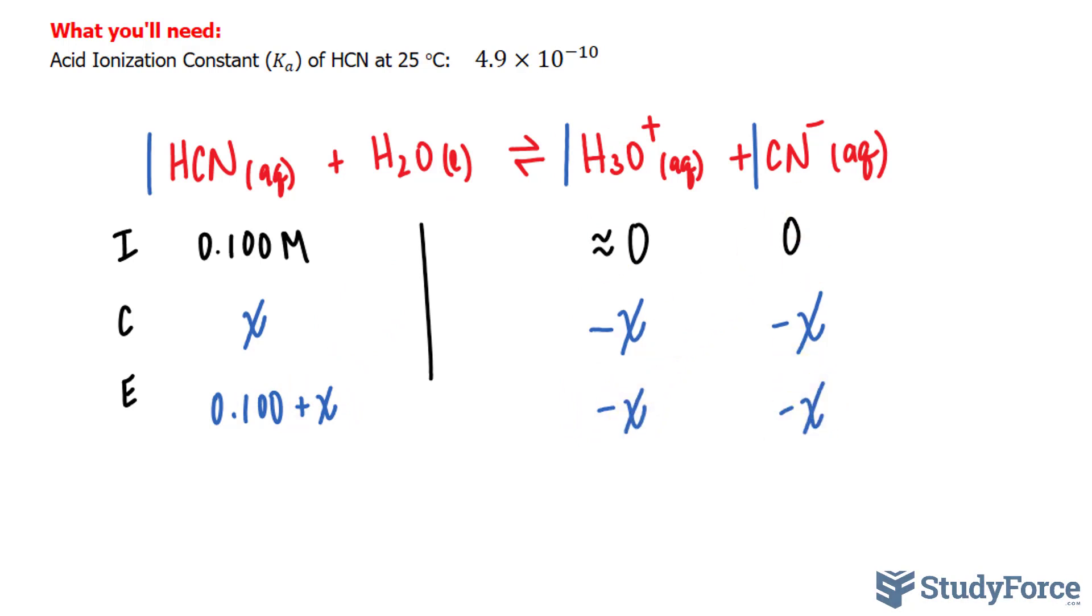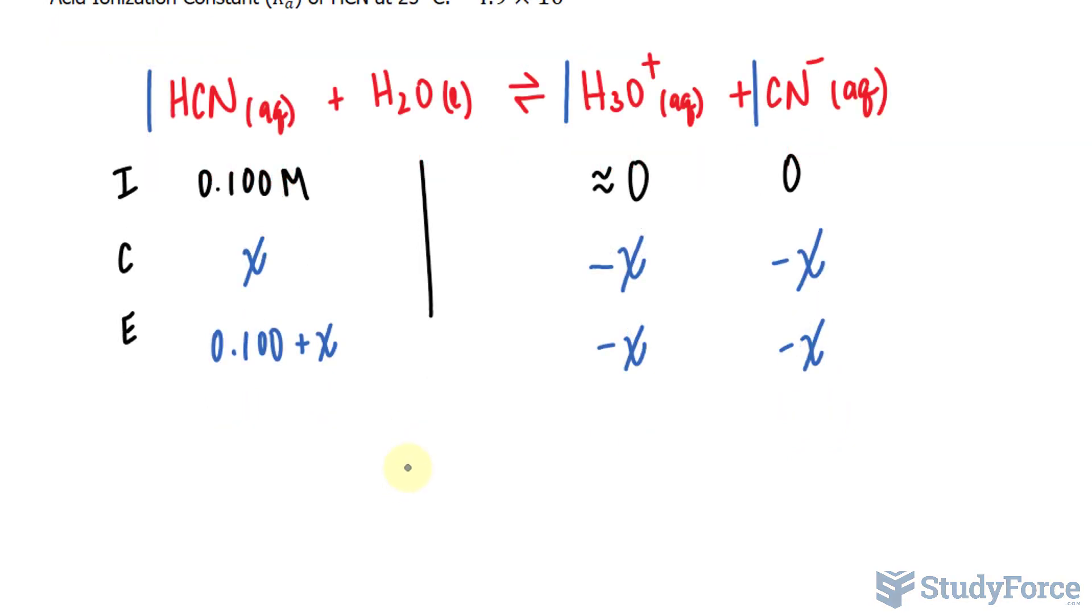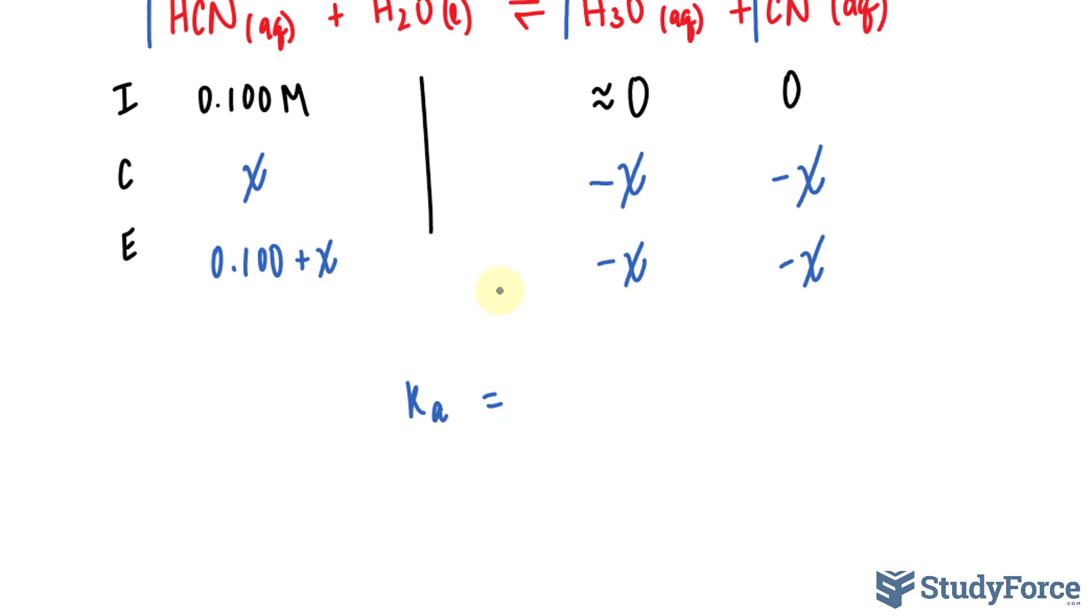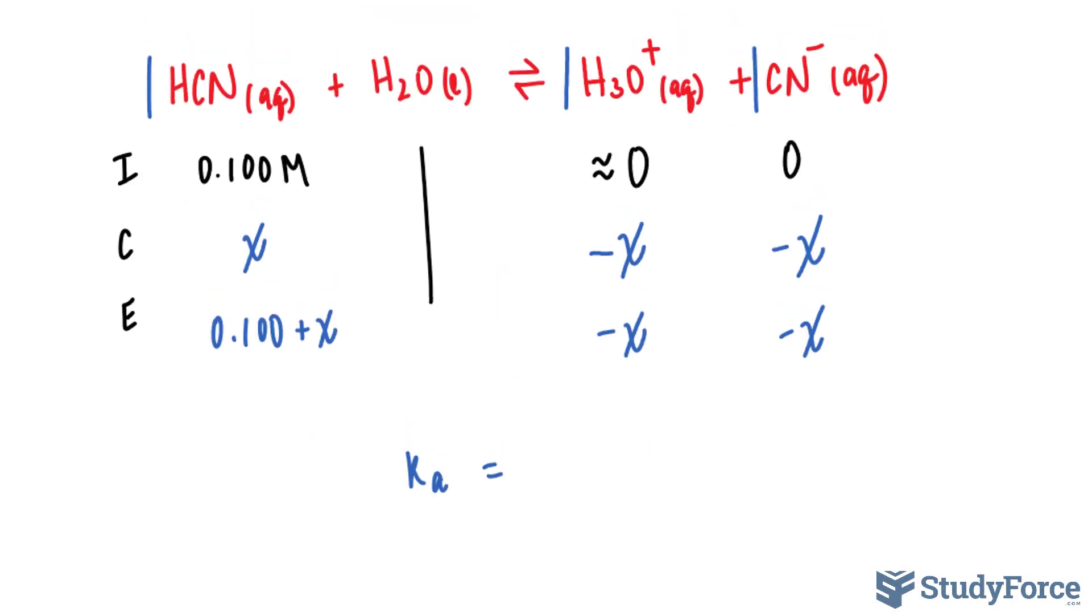Next we'll write down the equilibrium expression where we have Ka and that's given in the question. Notice here that the acid ionization constant is 4.9 times 10 to the power of negative 10. We'll substitute that in a moment. It is equal to the concentration of hydronium times the concentration of CN over the concentration of HCN.